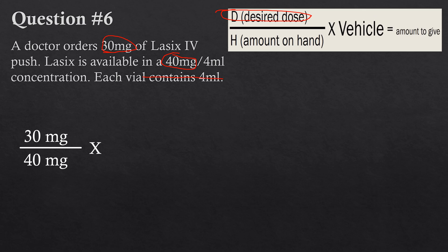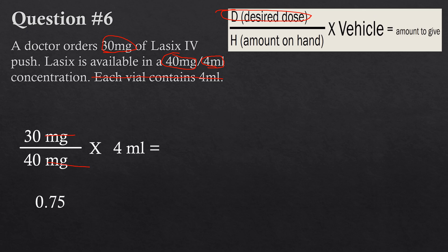This part gets a little confusing because each vial contains 4 mL — but don't use that as the vehicle just because of the vial size. What matters is the concentration: 40 milligrams in 4 mL. That's where you find the vehicle — to get 40 milligrams you need 4 mL, so the vehicle is 4 mL. Solving: 30 divided by 40 — milligrams cancel — gives 0.75. Multiplied by 4 mL gives 3 milliliters. It's very important to identify the vehicle correctly.